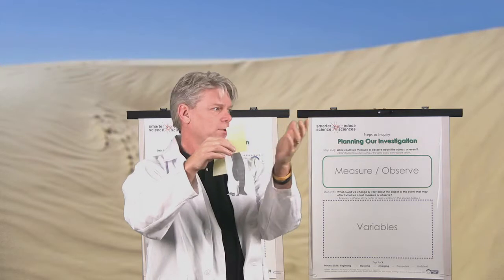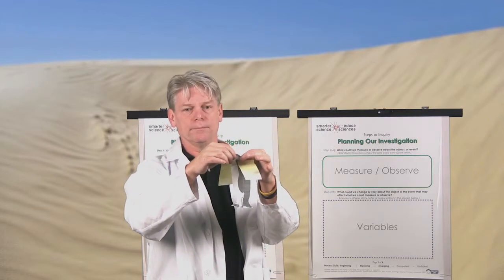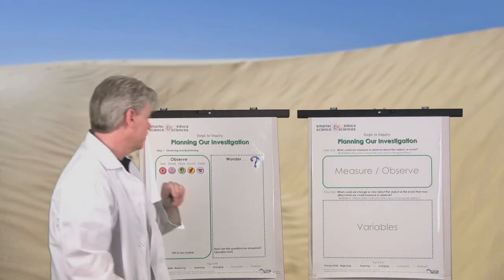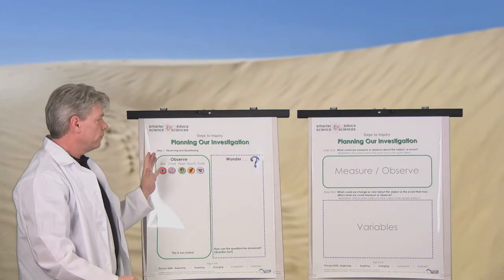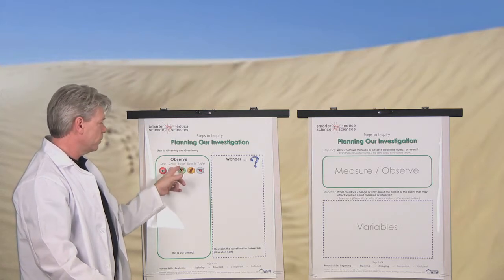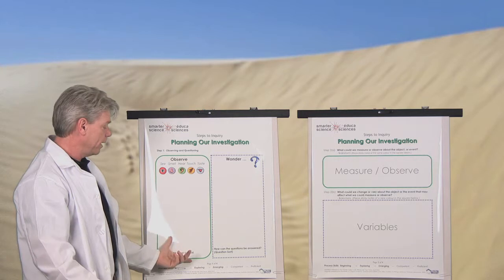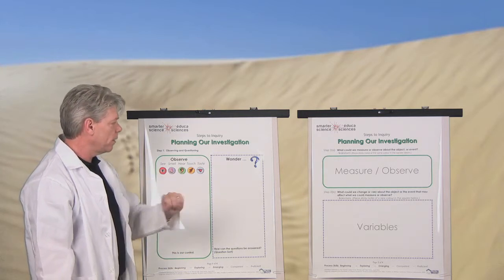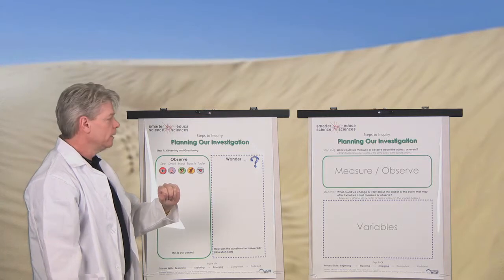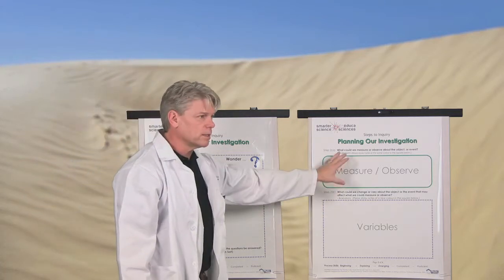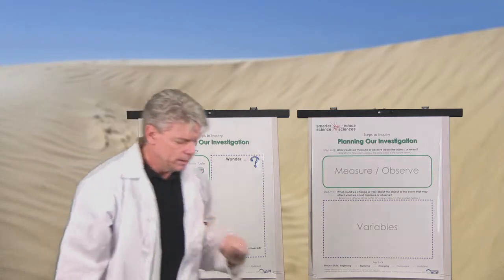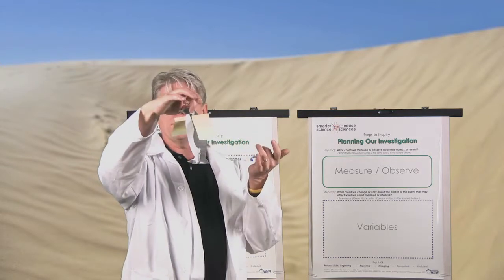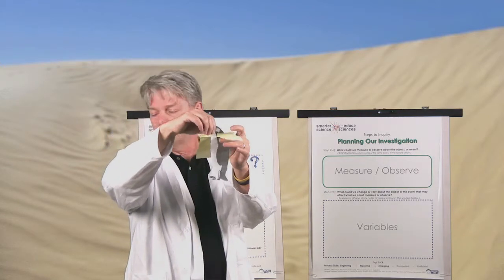The posters themselves lead the kids through the process. There are four posters. The first step we look at is observing. We're asking the kids to make their observations, then come up with some questions and wonderings. The very first stage is to have the object available for students to make their observations on — in this case, we have the Penguin.